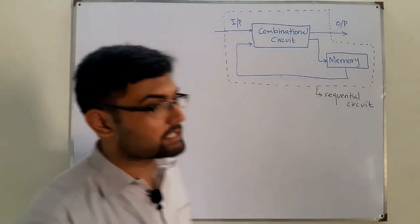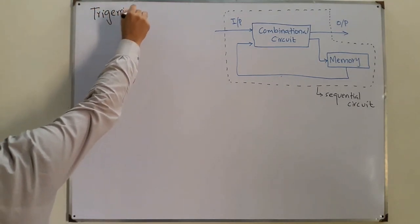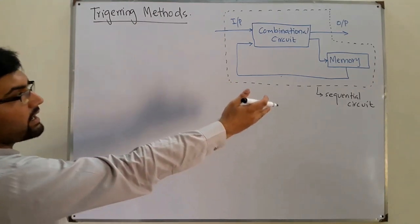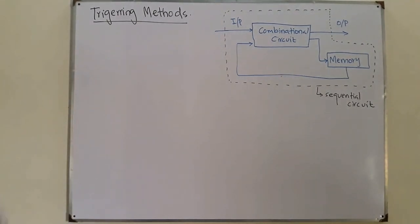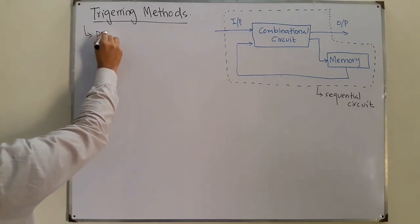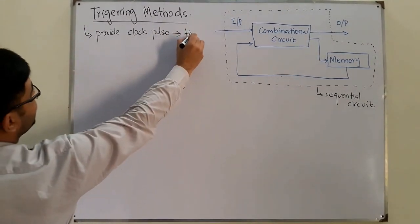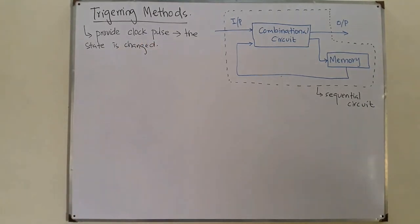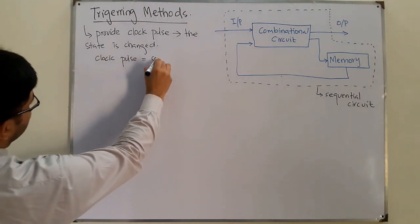Bismillahirrahmanirrahim. Assalamualaikum. Salam Khan here, and today we see the different triggering methods. This is a basic structure of a sequential circuit which you've seen before. Today we see the triggering method. What basically is triggering? You provide a control signal — you provide the clock pulse — and the state gets changed. This is called triggering. The clock pulse is equal to the control signal.